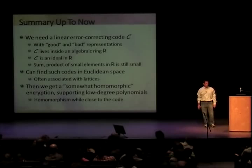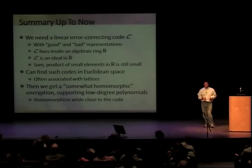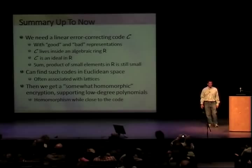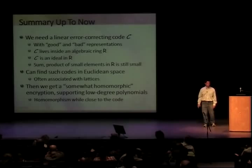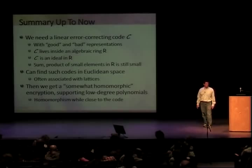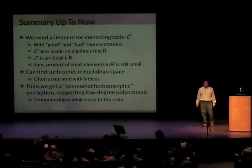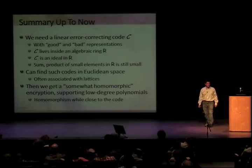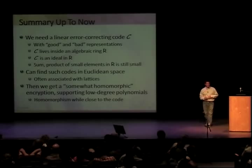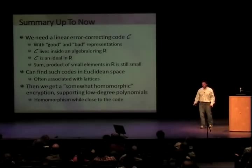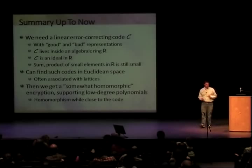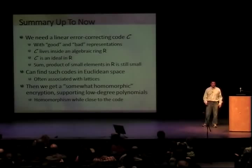Let's summarize what we need. We need a linear error-correcting code C that has good and bad representations — the good one lets you correct errors, the bad one doesn't let you distinguish far from near. We need C to live inside an algebraic ring R. We need C to be an ideal in R. We need the sum and product of small ring elements to still be small. These structures do exist, usually living in Euclidean space — for example, integers mod p live inside R^1. If you find this structure with these properties, you get a somewhat homomorphic encryption scheme.